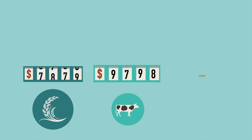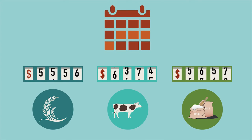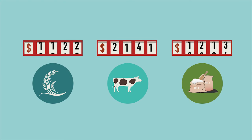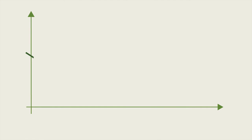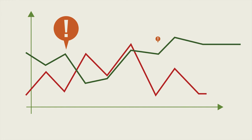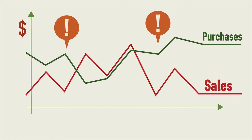Most agricultural commodities experience price volatility over time, and the level of volatility is prone to change unexpectedly. The risk faced by an agribusiness depends on its trading positions, in terms of purchases and sales of agricultural commodities during a season.